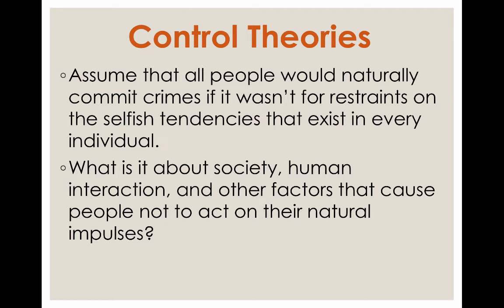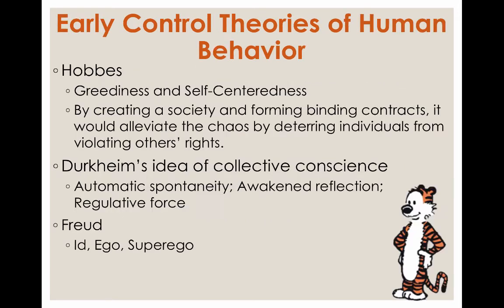Control theories assume that all people would naturally commit crimes if it weren't for restraints on the selfish tendencies within the individual. Control theorists ask: what is it about society, human interaction, and other factors that cause people not to act on their natural impulses? Much of this comes from Hobbes, who claimed the natural state of humanity was greediness and self-centeredness — without laws and rules, people would just fight each other. He argued that by creating a society and forming binding contracts, it would alleviate the chaos by deterring individuals from violating other people's rights.